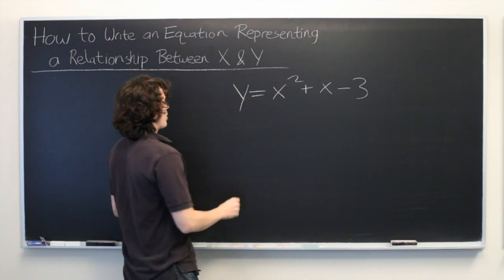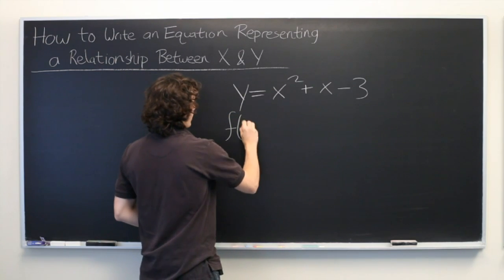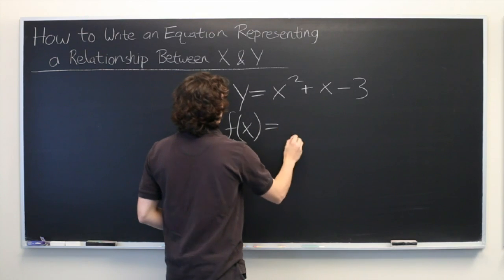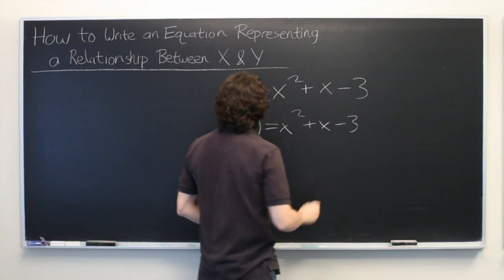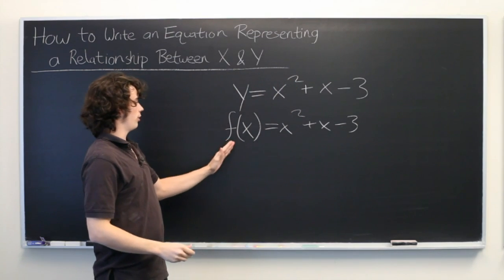When that is possible, we sometimes use the notation f of x to represent the same relationship. It simply means a function of x.